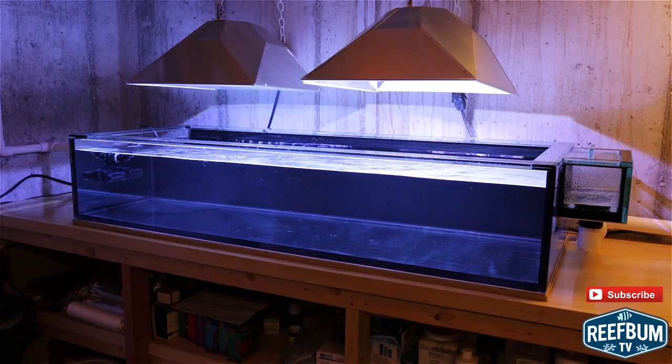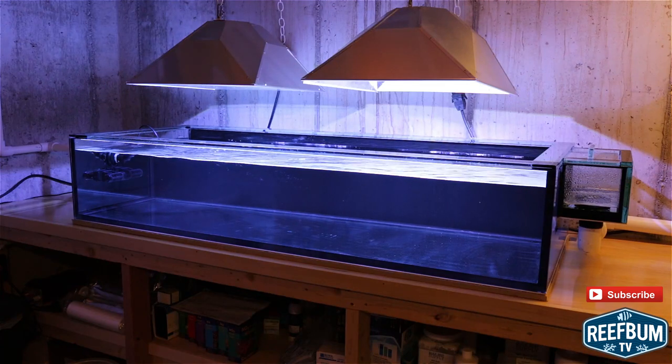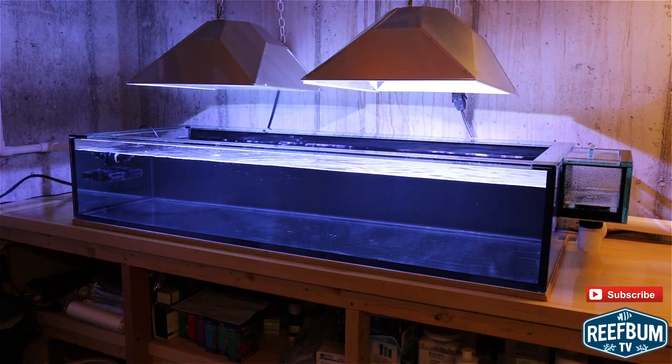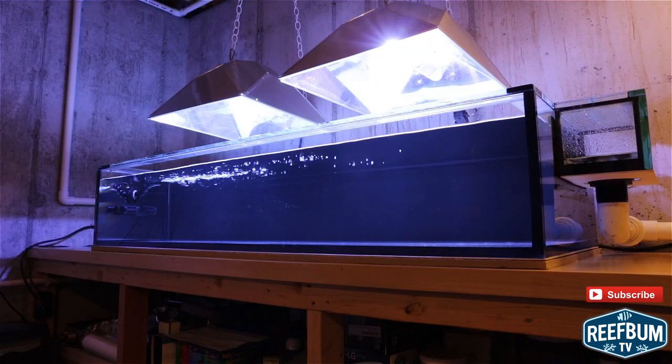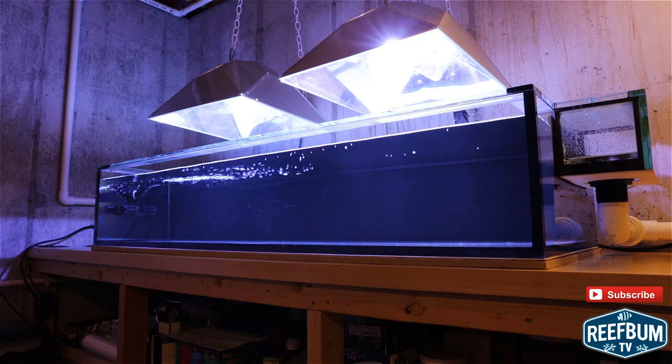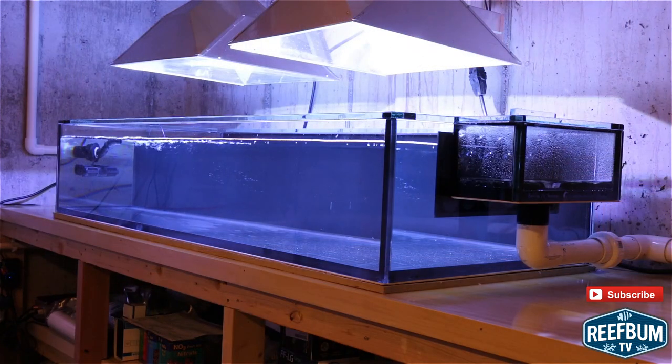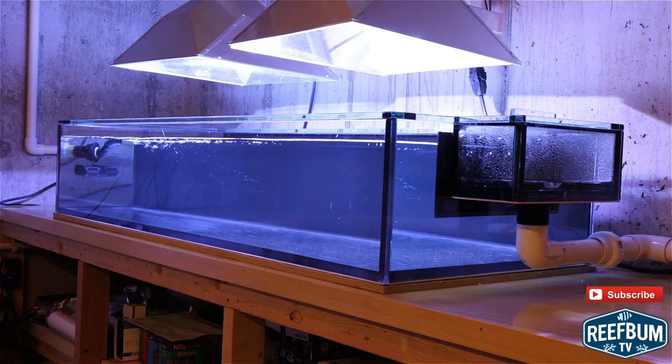I also like to stick with what works, so it became a no-brainer to use Coast to Coast Custom Aquariums once again for this project. Here are the specifications for the frag tank: it's 75 gallons, 60 inches long, 24 inches wide, and 12 inches tall.